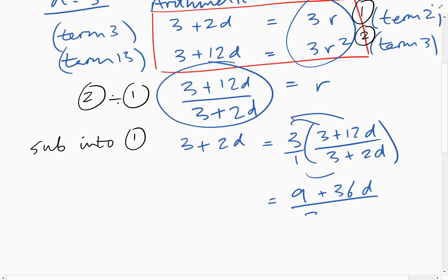And the left-hand side stays as it is. So let's multiply that to the other side now. So we'll have 3 plus 2d times 3 plus 2d equals 9 plus 36d.